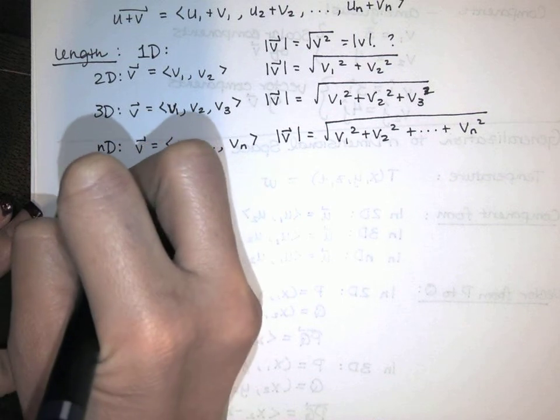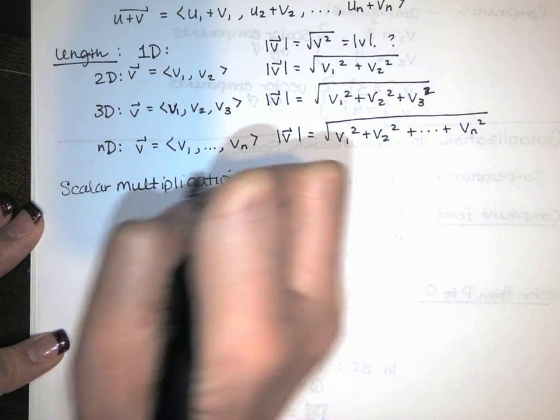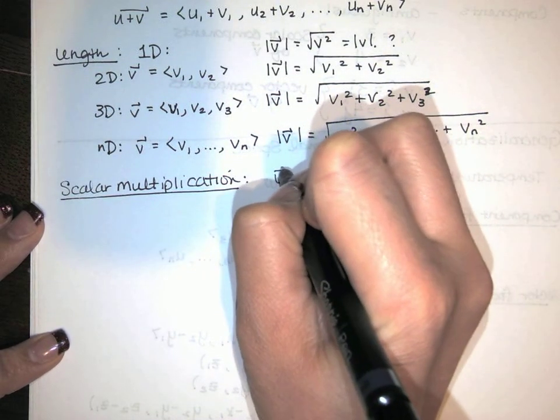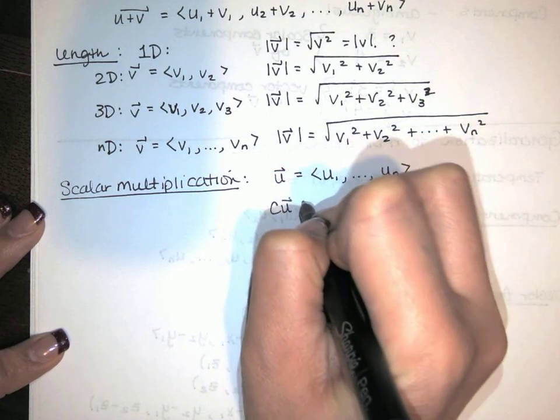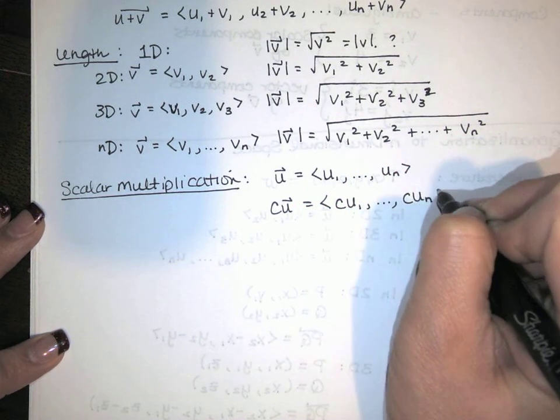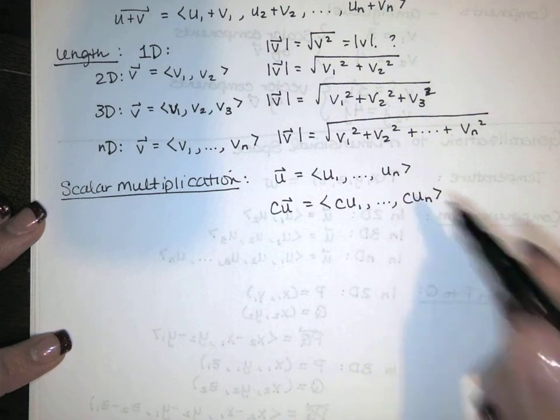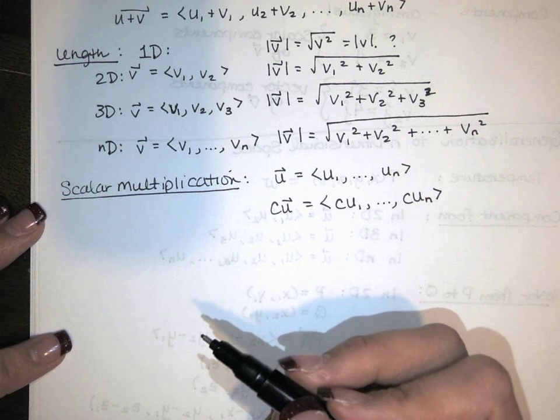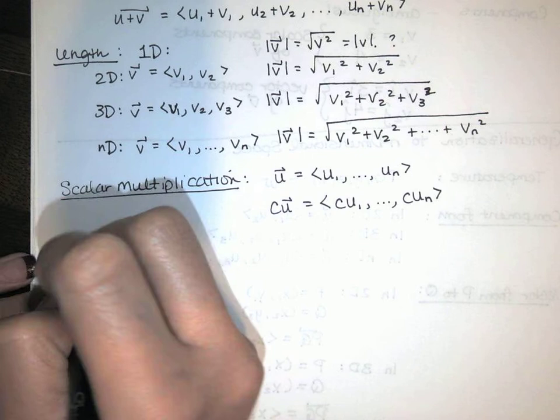Scalar multiplication. It's, of course, exactly the same. If u has n dimensions, c times u has n dimensions. Let's multiply all of the components of u by c. And u could be 2, so it'd be 2-dimensional. You could be 3, be 3-dimensional. It could be n. n equals 5. We could have 5 dimensions. That'd be fine. Scalar multiplication is the same.